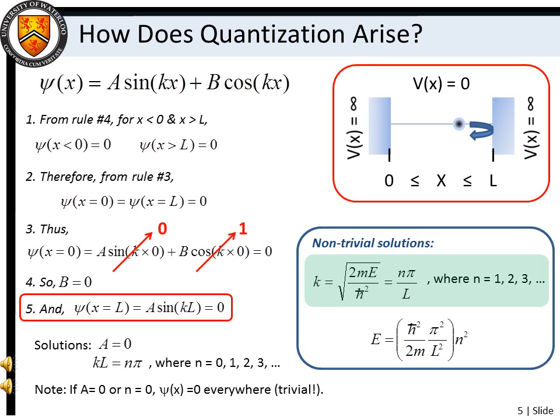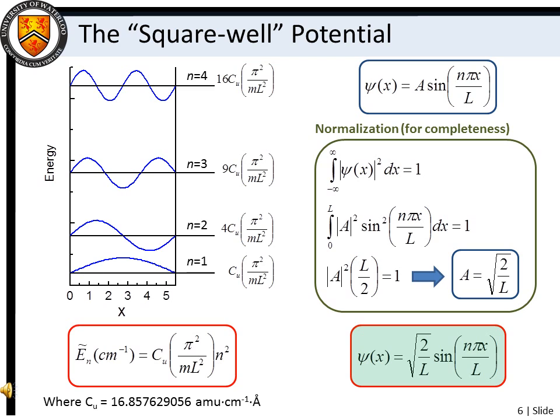Recalling that k equals the square root of 2mE divided by h-bar, this simple derivation shows us that our confined particle has energies that depend on particle mass, the box length, and quantum number n. Normalizing our wave function ensures that the square of the wave function equals 1. A plot of the particle-in-a-box energies for our given box length shows a ladder of energy levels with an increasing separation between each rung owing to the n-squared quantum number dependence. Also overlaid on the energy level plots are the wave functions corresponding to each energy level. Thus, we see that each higher energy wave function is just a higher harmonic of the lowest energy, or ground state, wave function. Owing to its shape, the particle-in-a-box potential energy well is also known as a square well.